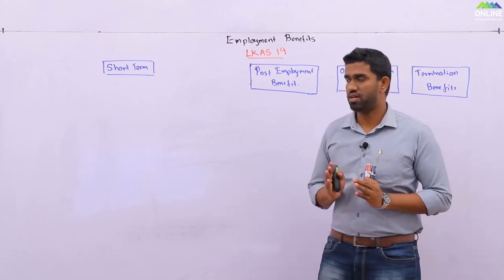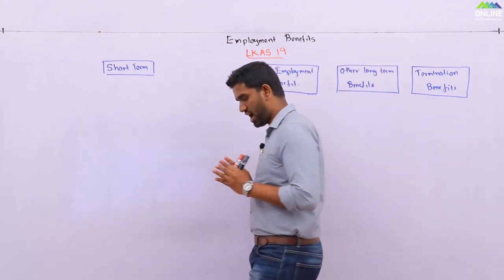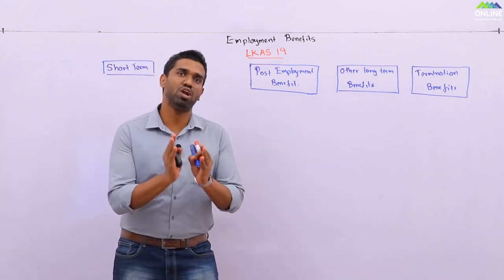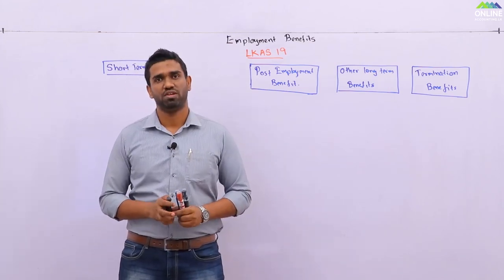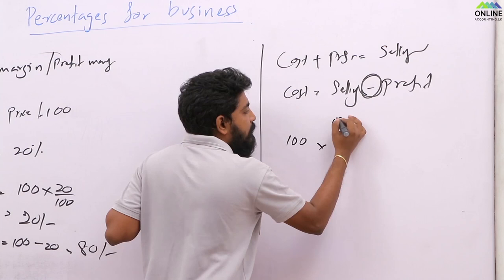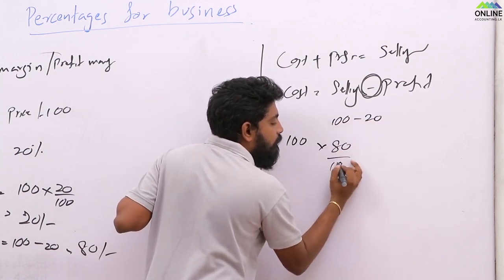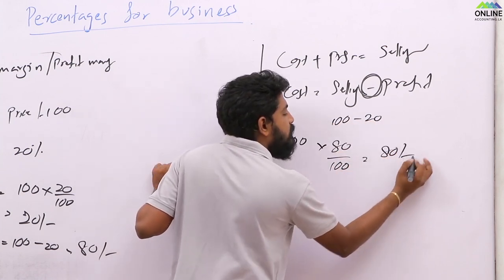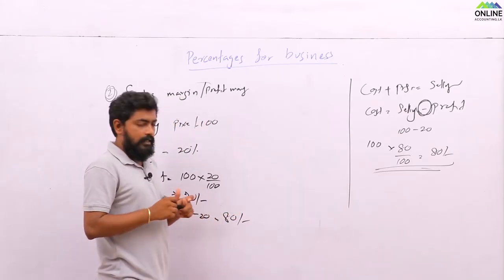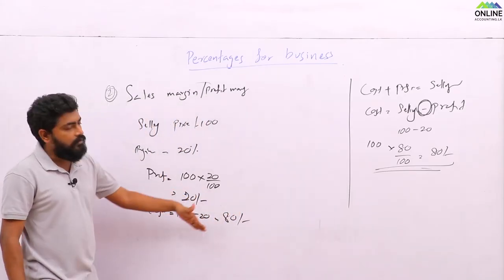Out of this benefit — we will be discussing only short-term benefits. The calculation is 100 minus 20, which is 80 percent, giving 8 rupees. Get the answer directly rather than going through those lengthy steps.